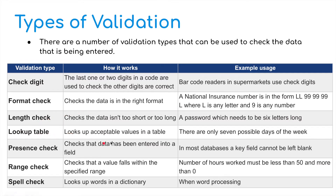A lookup table looks up acceptable values in a table. There are only seven possible days of the week, for example, or 12 months of the year. A presence check checks that data has been entered into a field. In most databases, a key field cannot be left blank. Similarly, if you are filling in a form on the internet and it requires you to enter a password or your name, it is checking that you have entered that correct data.